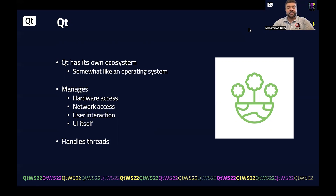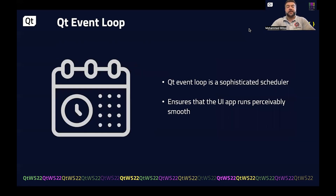Importantly, Qt handles threads really nicely and natively within the framework itself. The Qt event loop is a sophisticated scheduler that ensures the UI app runs perceivably smooth. It's a really complicated framework responsible for ensuring that any elements based on time in your application are as smooth as they can be.